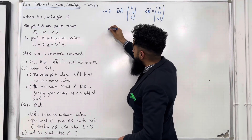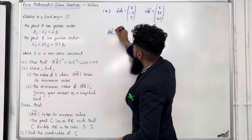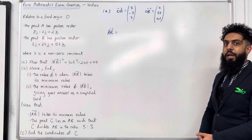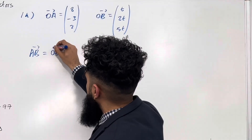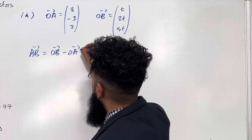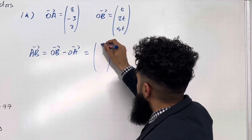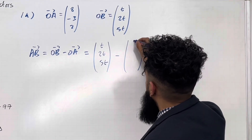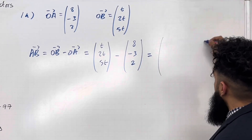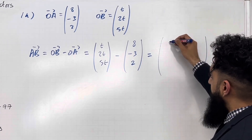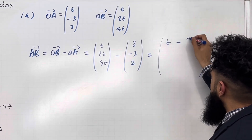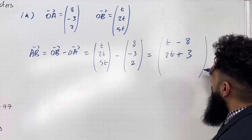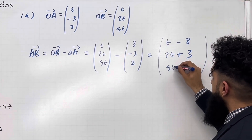I'm going to start by finding the vector A to B. Because we're dealing with position vectors, this is given by OB minus OA. So we've got (t, 2t, 5t) minus (8, -3, 2). Subtracting the two vectors: the i component is t minus 8, the j component is 2t plus 3, and the k component is 5t minus 2.